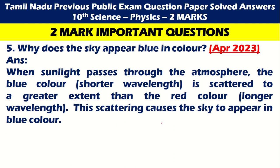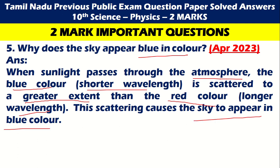Next: Why does the sky appear blue in color? When sunlight passes through the atmosphere, the blue color is scattered to a greater extent than the red color, which has a longer wavelength. This scattering causes the sky to appear blue in color.